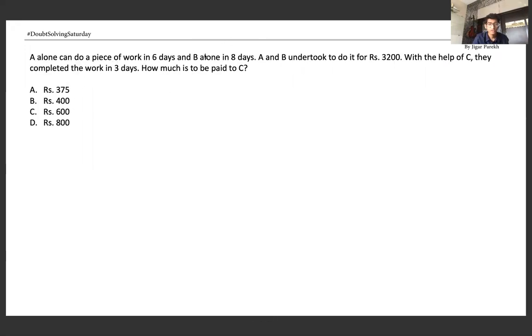Okay, okay. A alone can do a piece of work in six days and B can do it in eight days. A and B undertook to do it for 3200 rupees with the help of C. They completed the work in three days. How much is to be paid to C?